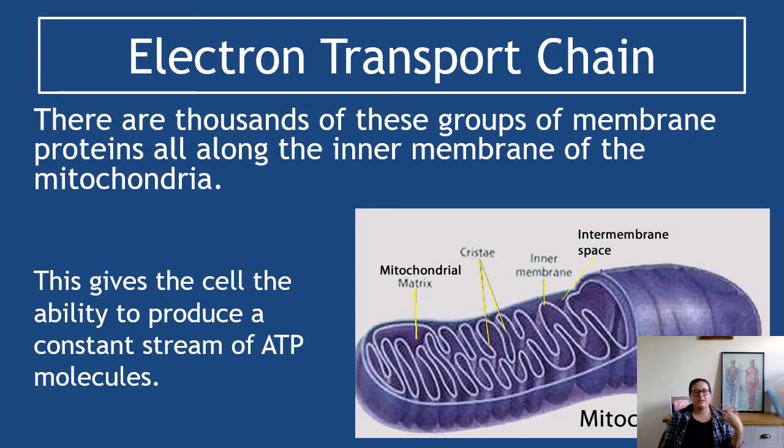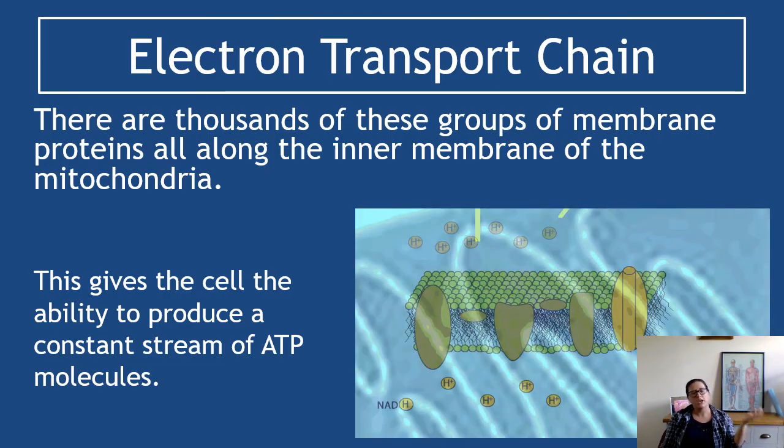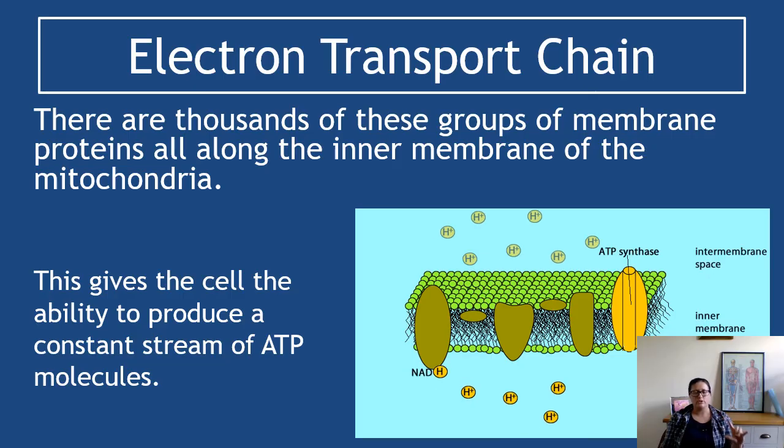Okay, now the presence of thousands and thousands of these groups means you can get a constant stream of ATP molecules as long as you have glucose and oxygen. You need to make sure they've got glucose, you need to make sure you've got oxygen.